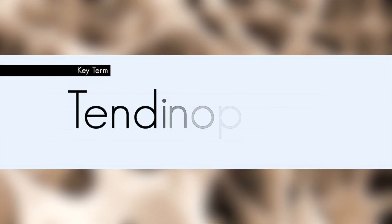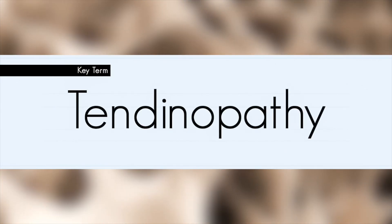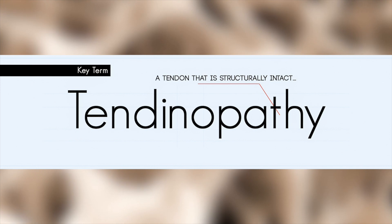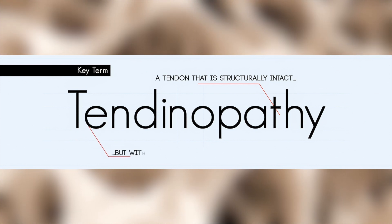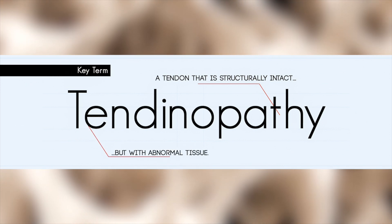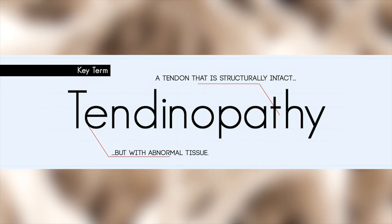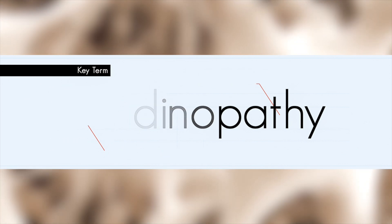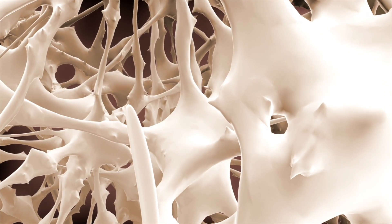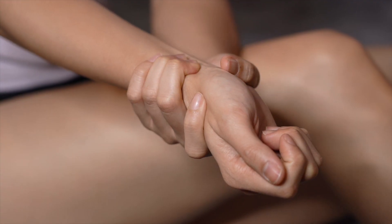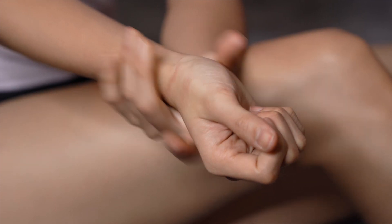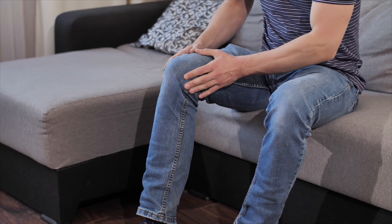The word tendinopathy refers to a tendon that is structurally intact but with abnormal tissue. It's a clinical syndrome characterized by persistent localized tendon pain and loss of function. Tendinopathy most commonly occurs as a result of repeated mechanical loading or overuse.